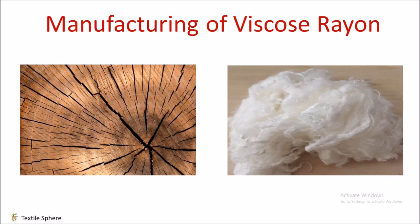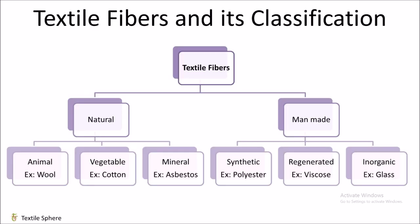Before going into details about viscose rayon, let's see the definition of textile fiber and its classification. Textile fibers are a unique form of polymeric material which combine the chemical, physical and biological properties of polymer and the flexibility, strength and processibility of fiber structure. These properties allow them to be spun into yarn. Now let us discuss the classification of textile fibers.